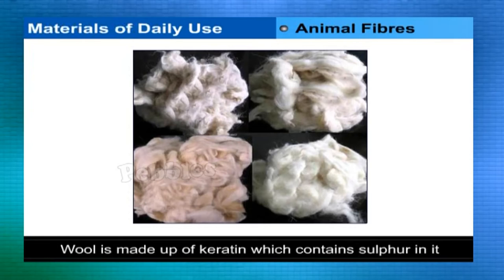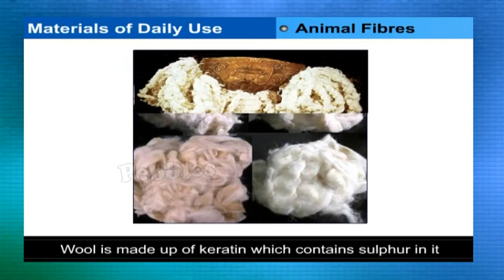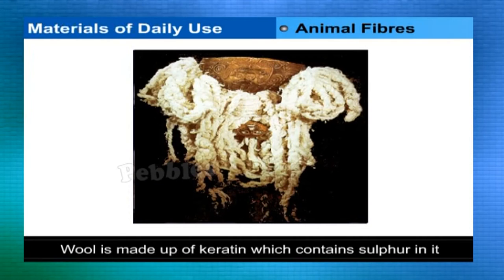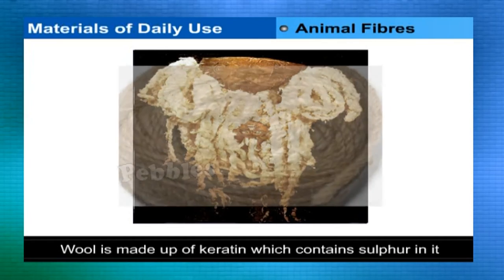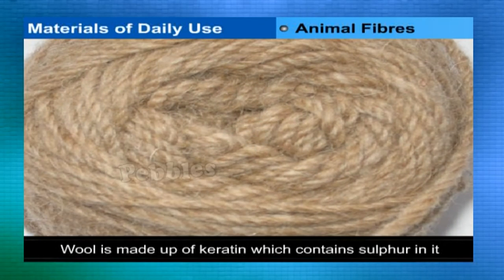Wool is collected from the sheep by cutting with clippers; this process is called shearing. Goat wool — angora, pashmina, and cashmere are the most important breeds of goat as well as varieties of wool. Camel wool — camels grow a very thick coat of hair.